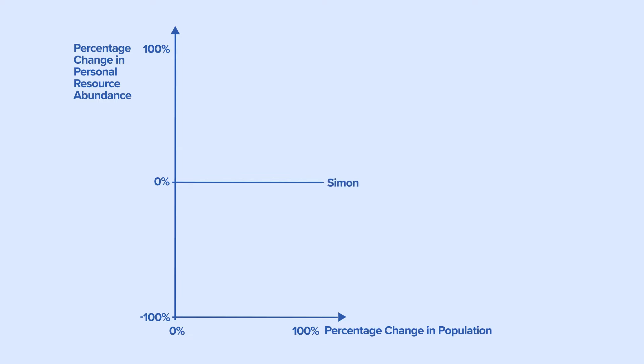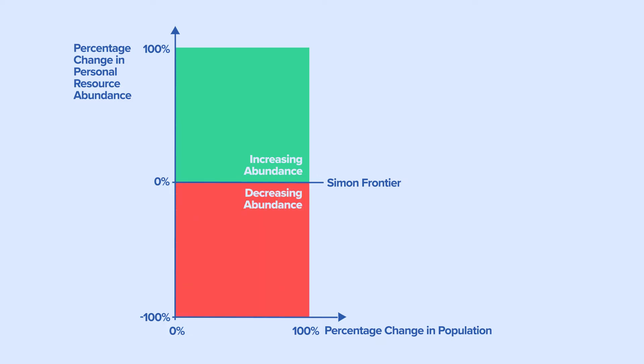We call the 0% line separating these two areas the Simon Frontier. Above this line is the green area, where personal resource abundance increases as the population increases. Below the Simon Frontier is the red area, where personal resource abundance decreases as the population increases. Julian Simon predicted that resource prices would be in the green area, and Paul Ehrlich predicted that resource prices would be in the red area.